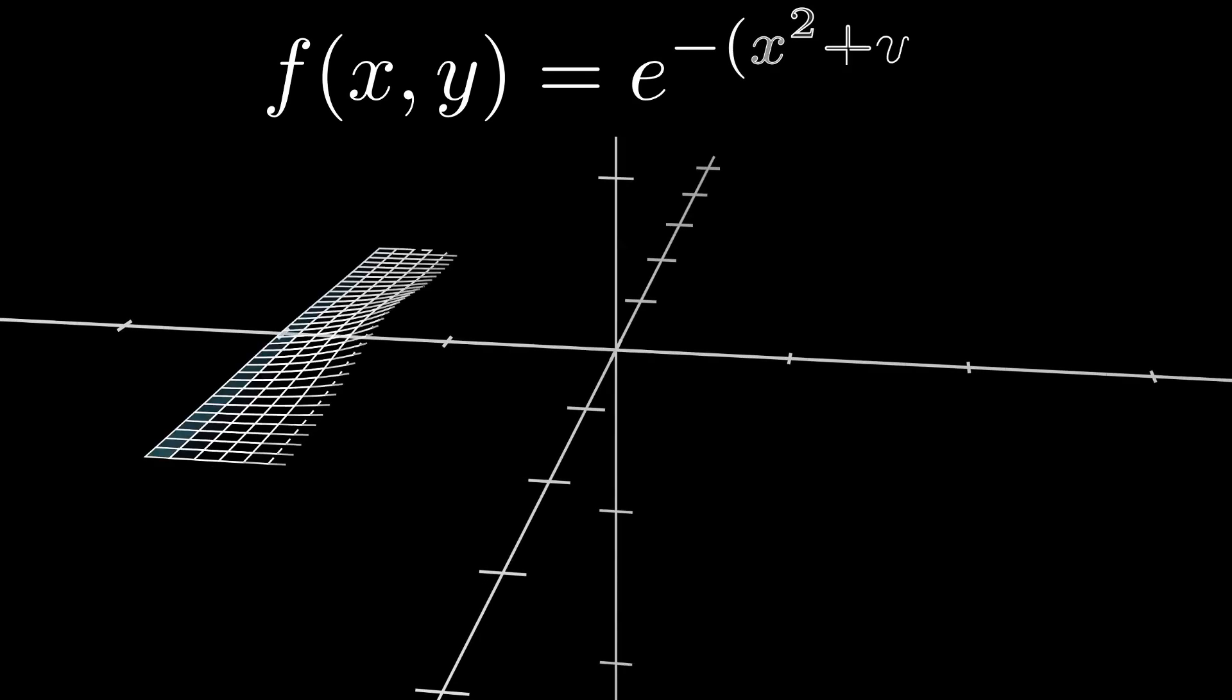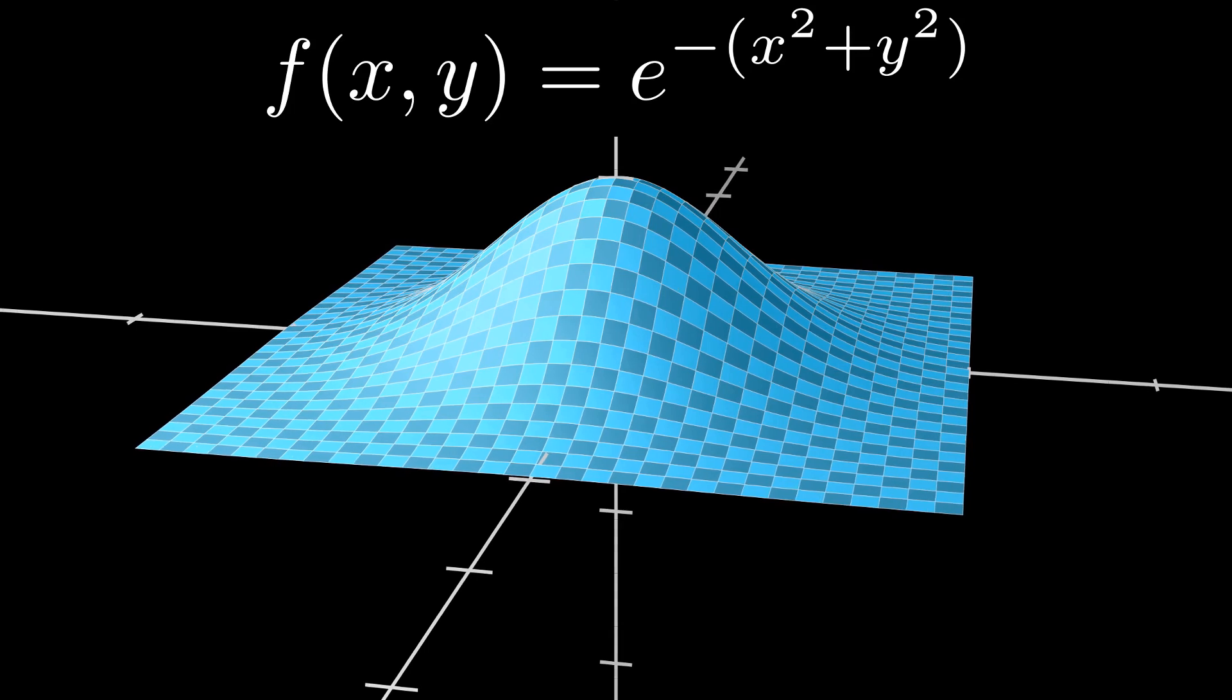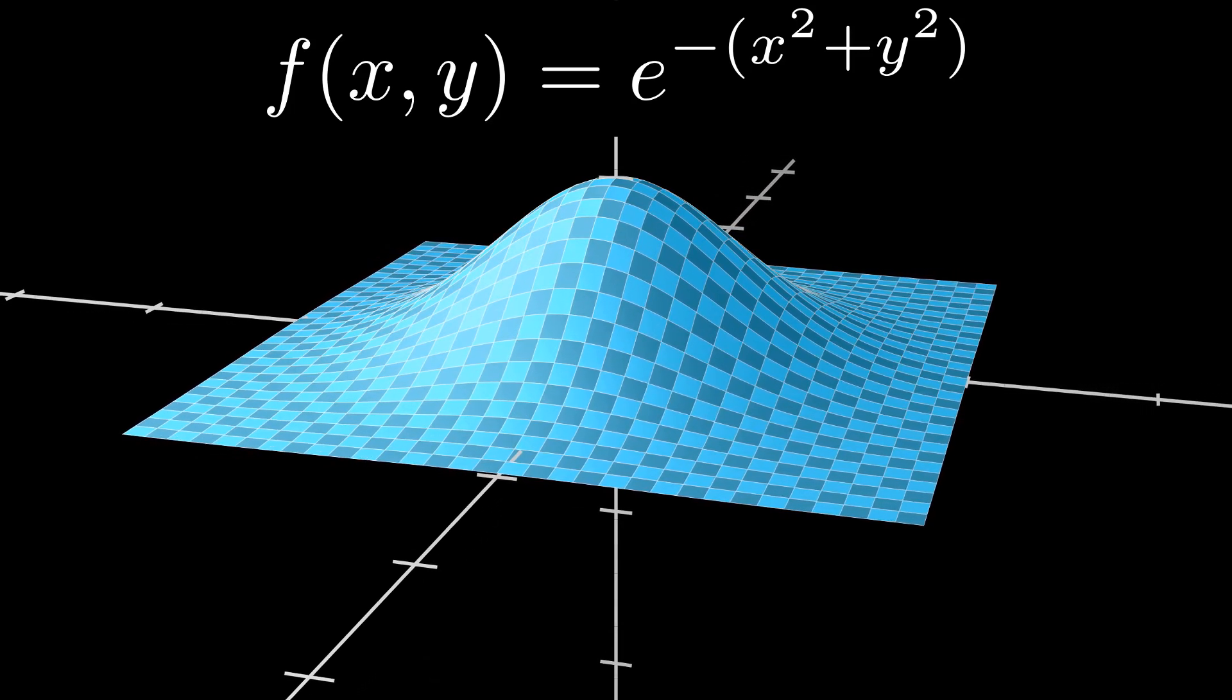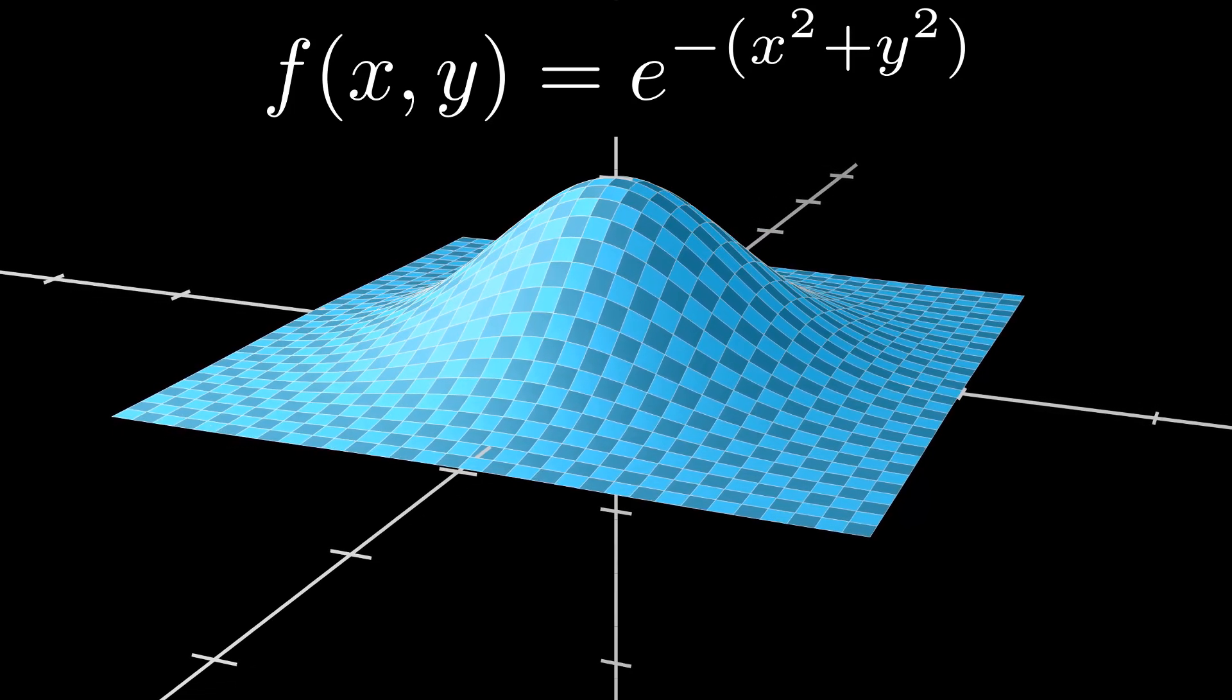Let's go back to e to the negative x squared. Instead of considering the function e to the negative x squared, let's consider the three-dimensional function e to the negative x squared plus y squared. Now, although this may seem like an unnecessary step, it will make sense.